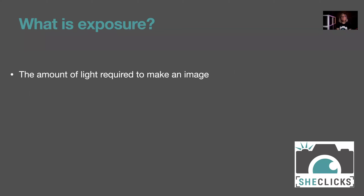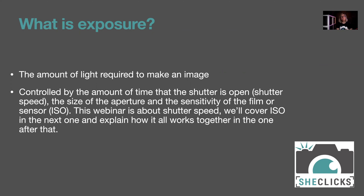A little recap: what is exposure? It's the amount of light that you need to make an image. We often think about exposure as the brightness of the image, but actually brightness is a feature of the exposure. Exposure is controlled by the amount of time the shutter is open — also known as shutter speed — the size of the aperture, and the sensitivity or ISO of the film or sensor. This webinar is about shutter speed; we'll cover ISO in the next one, and the fifth webinar will pull everything together.